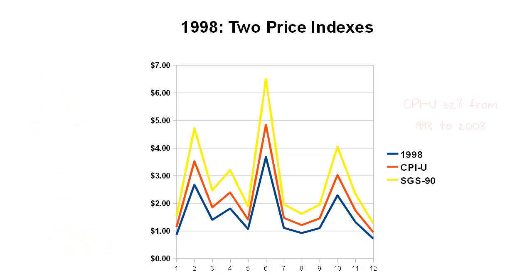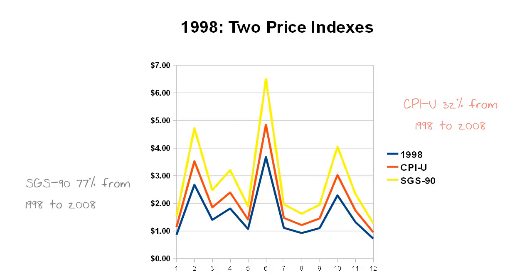The two lines here: the red is the 32% increase in the prices of these 12 goods by the CPI over 10 years — between 1998 and 2008, the CPI metric increased 32%. The red line shows a 32% increase in each of these prices. The yellow line is the SGS-90 statistic, which increased 77% over the same 10 years between 1998 and 2008. And you can see it's just a fudge factor — it's not independently calculated; he just adds an additional component to the results of the CPI. But the question is: which is more accurate?